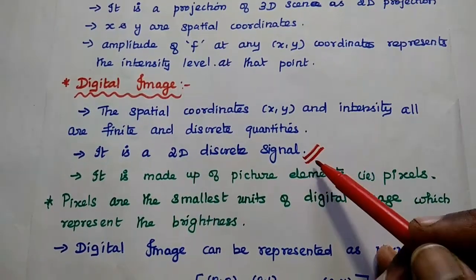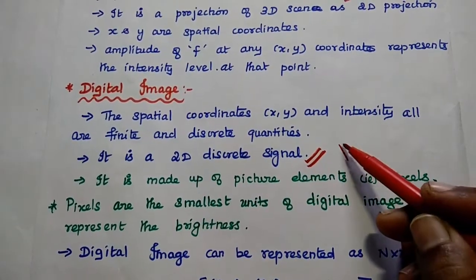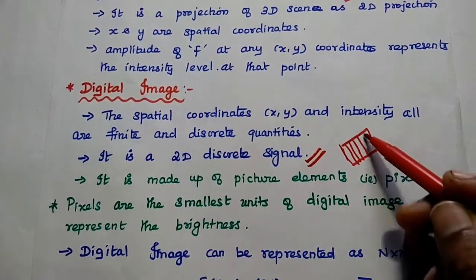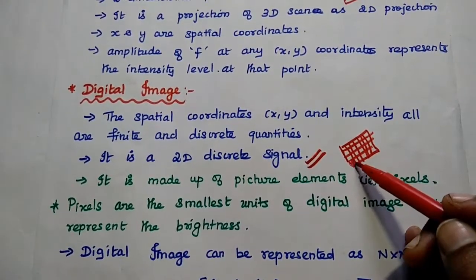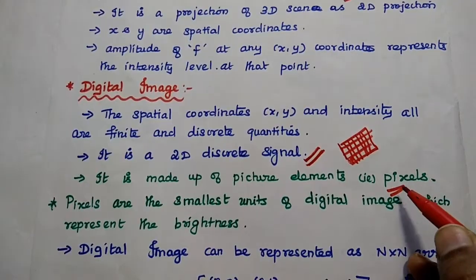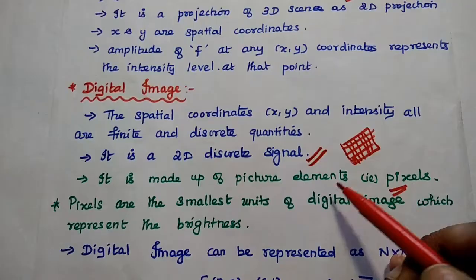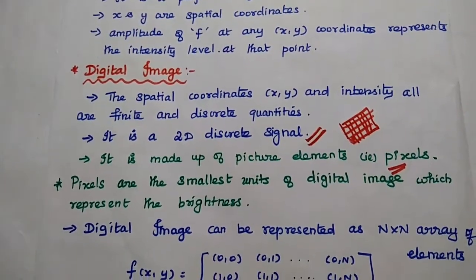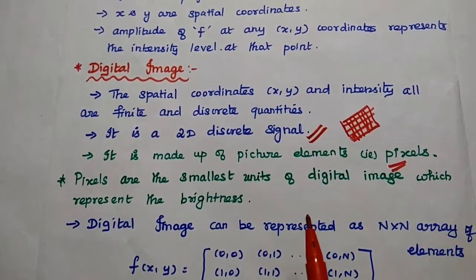A digital image can also be represented as a 2D discrete signal. This digital image is made up of picture elements — each element in this digital image can be represented as a picture element, that is nothing but a pixel. So pixel means it is a picture element, or sometimes we can say image element. These pixels are the smallest units of a digital image which represent the brightness at that point.